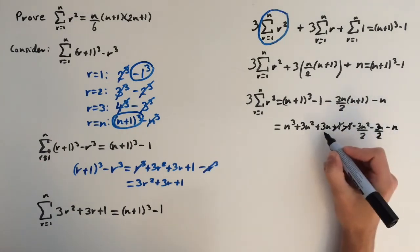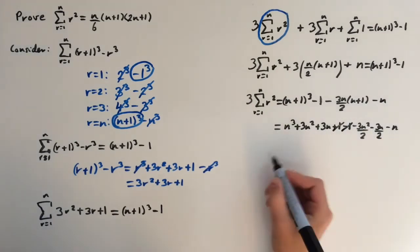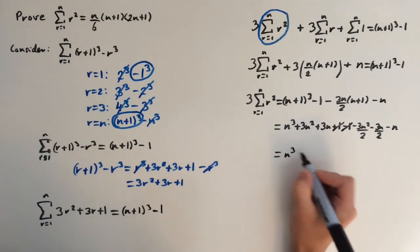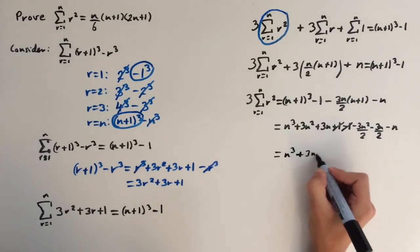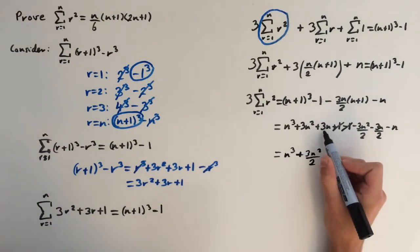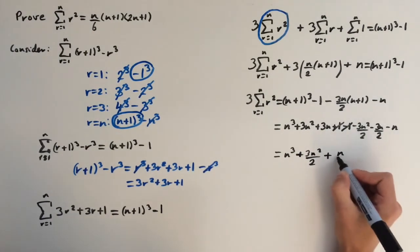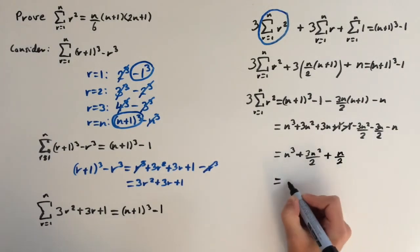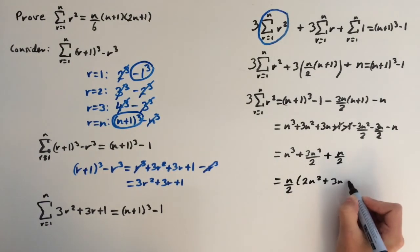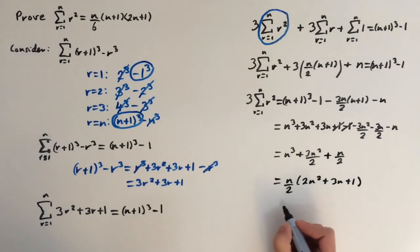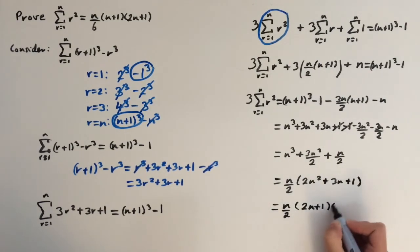The plus 1 and minus 1 cancel straight away. For the n terms: 3n minus n gives 2n, and then minus 3n over 2, which gives n over 2. For the n squared terms: 3n squared minus 3n squared over 2 gives 3n squared over 2. So altogether we have n cubed plus 3n squared over 2 plus n over 2. Factoring out n over 2, we're left with 2n squared plus 3n plus 1, which factors further as n over 2 times 2n plus 1 times n plus 1.